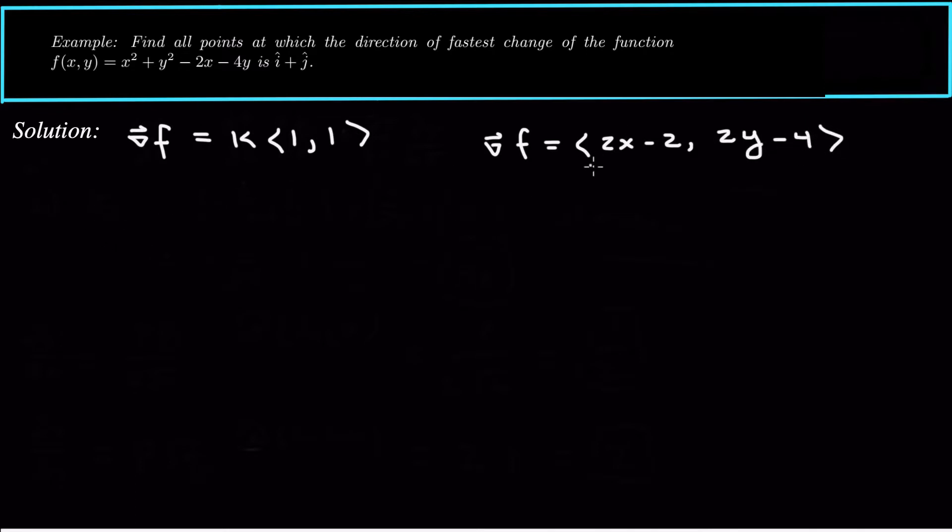Now if we set the gradient equal to k times this vector, we get two equations. So 2x minus 2 equals k and then 2y minus 4 equals k.